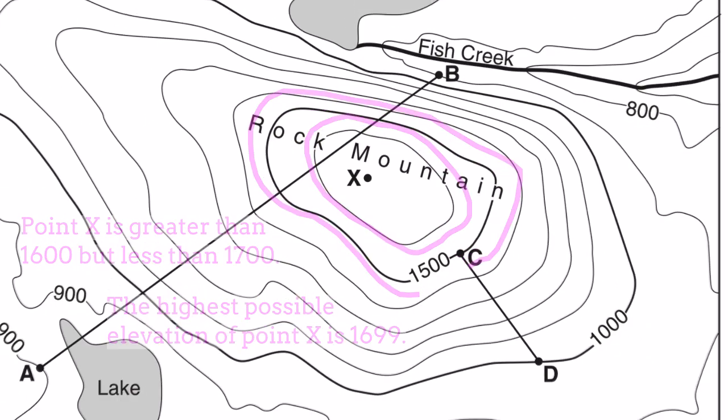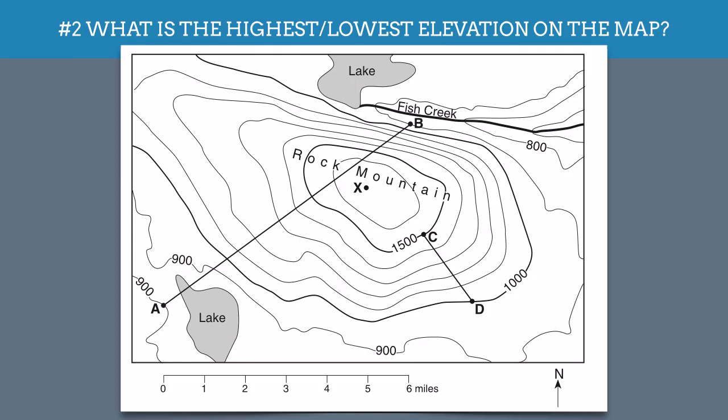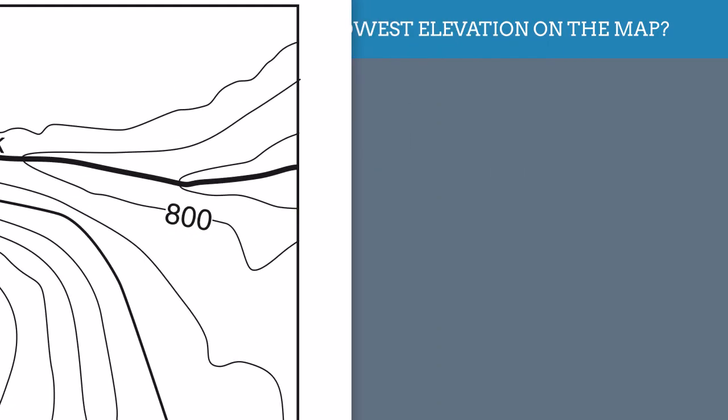But what about lower points on a map? Well, if I look at this map, it seems to me that the lowest spot would be over here by this 800 contour line. And this is decreasing. This river here is flowing downhill. That means that this is a 700 line.